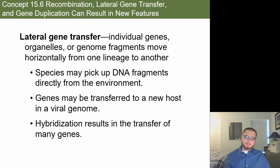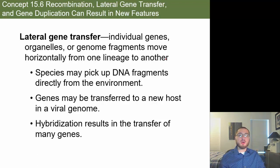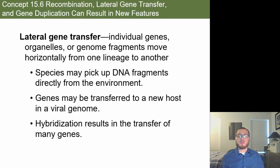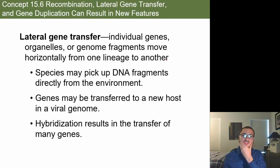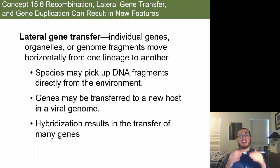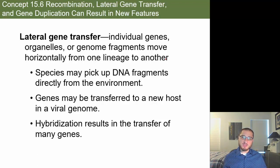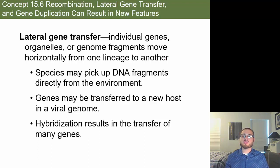Asexual organisms like bacteria can still create genetic changes through lateral gene transfer, where one bacterium transfers genes to another. Individual genes, organelles, or genome fragments move horizontally from one lineage to another — one bacteria can inject its DNA into another. This is similar to what viruses do: they incorporate themselves into the genome, which is why we have a lot of viral DNA in our own genome from viruses that existed long before us.